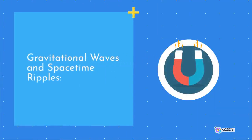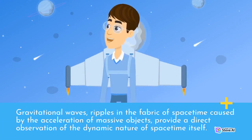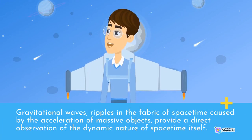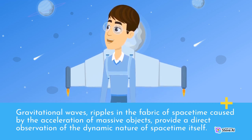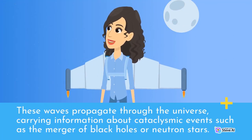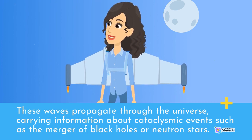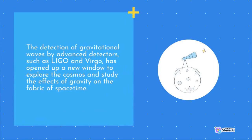Gravitational waves are ripples in the fabric of spacetime caused by the acceleration of massive objects, providing a direct observation of the dynamic nature of spacetime itself. These waves propagate through the universe, carrying information about cataclysmic events such as the merger of black holes or neutron stars. The detection of gravitational waves by advanced detectors, such as LIGO and Virgo, has opened up a new window to explore the cosmos and study the effects of gravity on the fabric of spacetime.